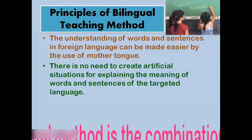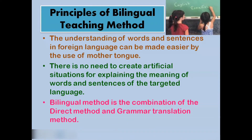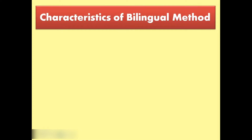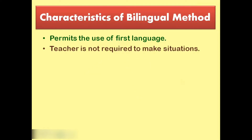The bilingual method is a combination of the direct method and the grammar translation method. Its characteristics include permitting the use of the first language alongside the second language. The teacher is not required to create situations artificially.